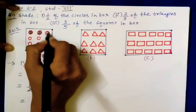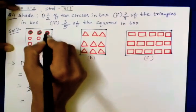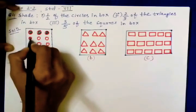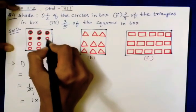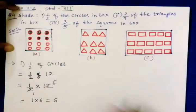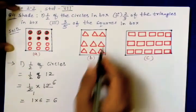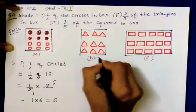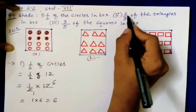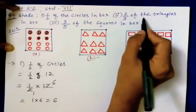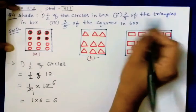So we will shade six circles. This is our first part. Now let us see the second one: two-thirds of the triangles.